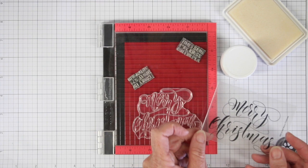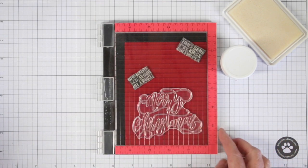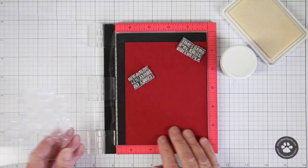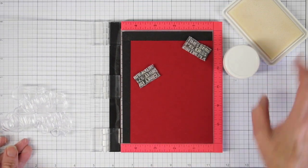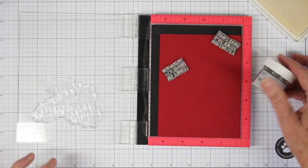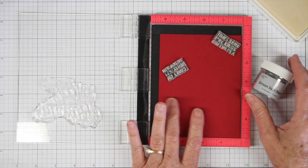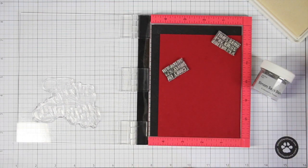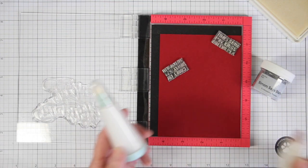I'm going to be embossing this Merry Christmas stamp onto some red cardstock using silver ink. I'm using my Mini Misti here with my stamp in place, the Simon Says Stamp silver embossing powder, and my red cardstock.